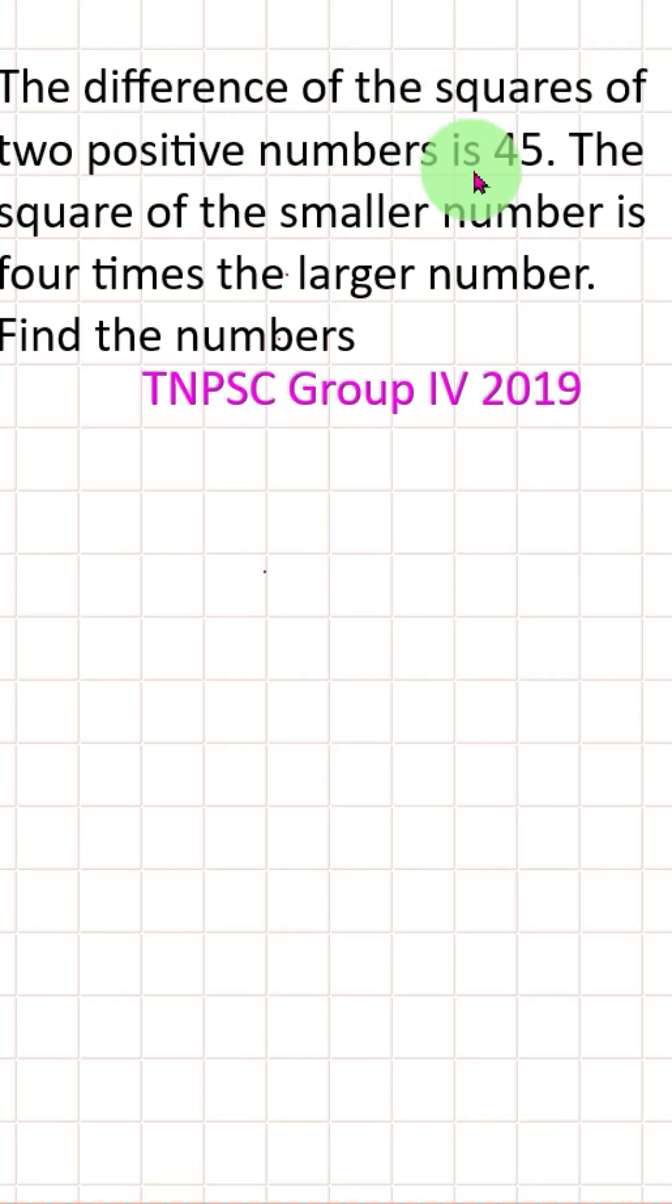The difference of the squares of two positive numbers is 45. The square of the smaller number is 4 times the larger number. Find the numbers.